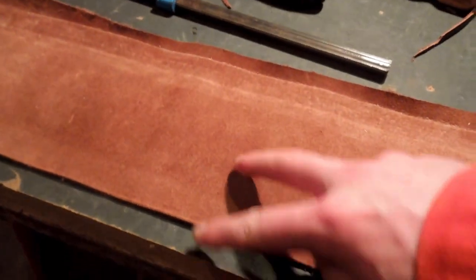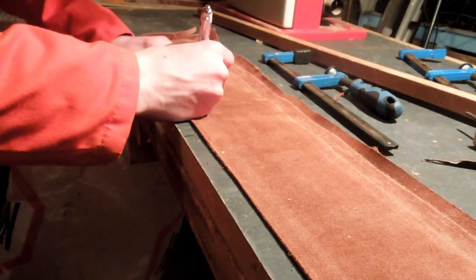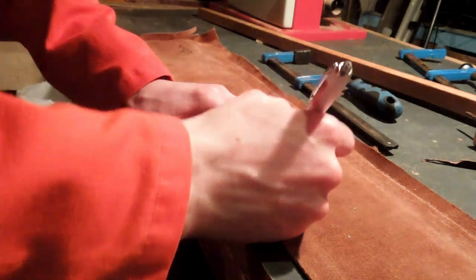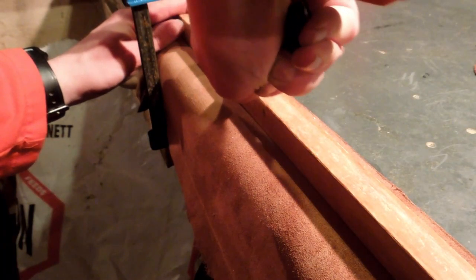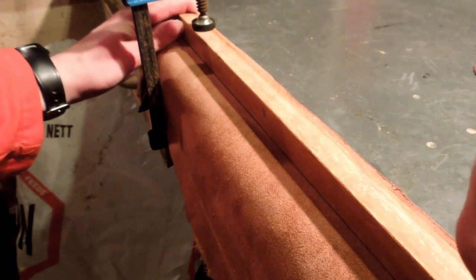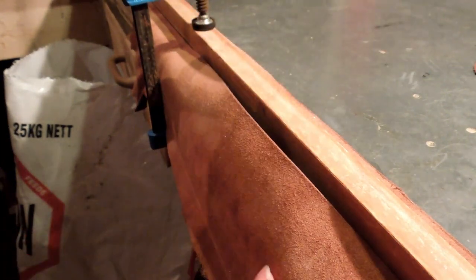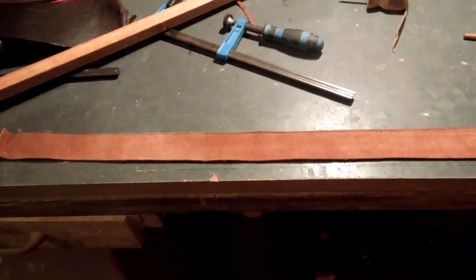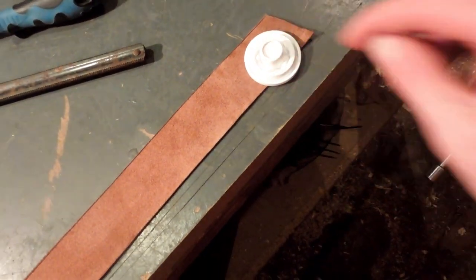With one clean edge cut, now I can measure and mark and then cut the second edge. I'm going to make it four centimeters thick. So the belt's been ripped down to four centimeters and now I'm going to cut this end round, and I'm just going to use this cap to draw a circle.